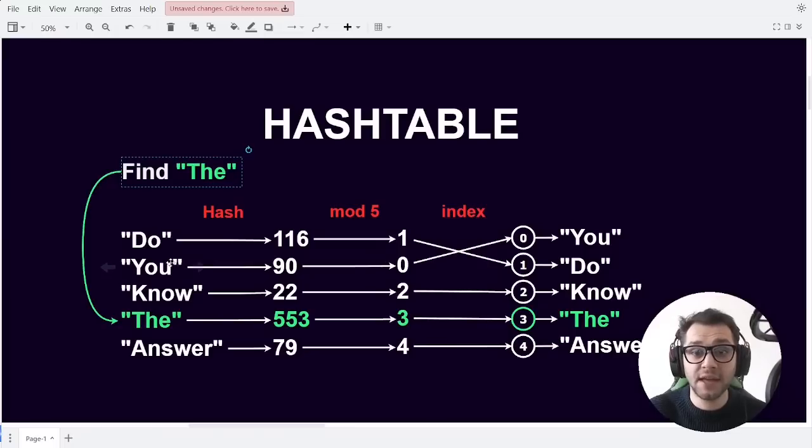Let's say we would want to find or place the word "the" in our hash table. We would take the word "the", we then perform our hash and get the number 553. This number is entirely dependent on your hash function and it's ideal that the hash of each value is different from one another.